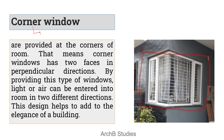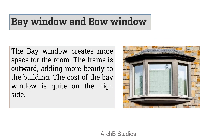Next we have the corner window. As the name defines, these are installed in the corner of a room or any space. They offer light and ventilation from two directions — from one side you get light into one portion of the room, and from the other side you get light and air into another portion. One of the biggest advantages is that it increases the beauty of the building.